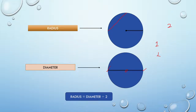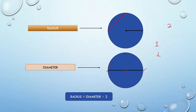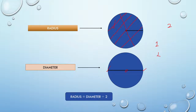This line touches two points on the surface of the circle and also passes through the center, so it is called diameter. A line touching two points on the surface of the circle but not passing through the center is not a diameter. Lines not passing through the center are called chords. So we have seen radius, diameter, and chord.